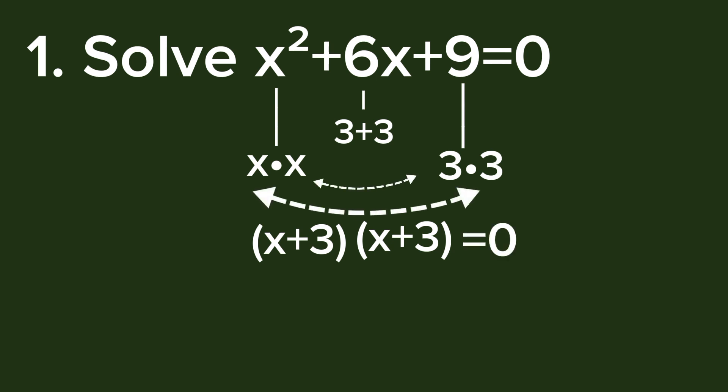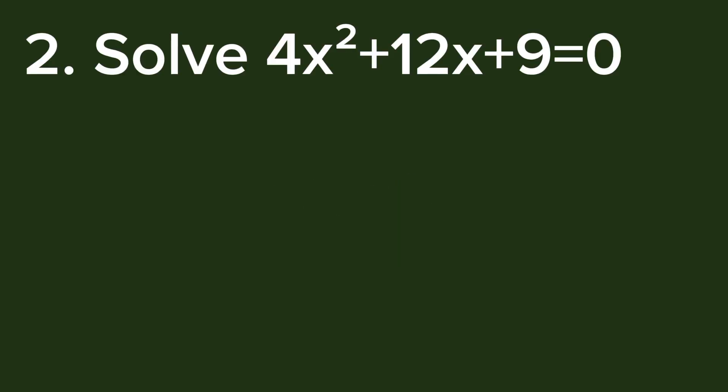Equate this to zero. By the zero product property, x + 3 = 0, so x = -3. Example 2: solve 4x² + 12x + 9 = 0. Here a = 4.